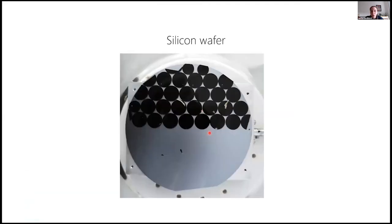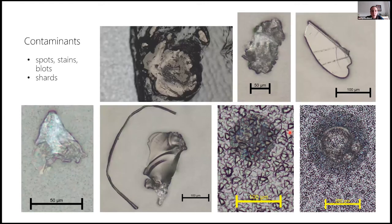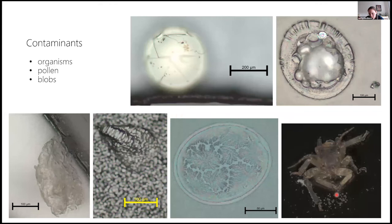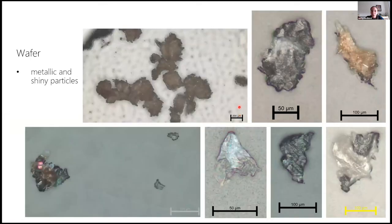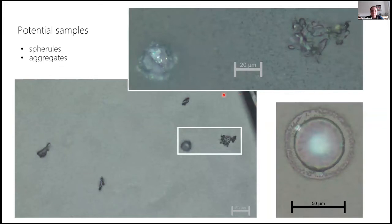So the morphology. This is the silicon wafer we retrieved. There were many contaminant spots and stains on the tape, on the silicon wafer. Here you can see some feet from some insect. There were insects of course, pollen, and other organisms, some shards and shiny particles.